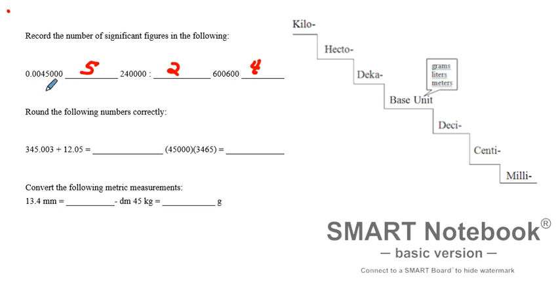So remember, do not count zeros that follow a decimal but do not end the number. And do not count ending zeros if they don't follow a decimal.